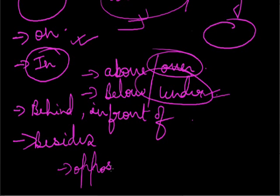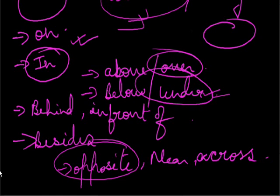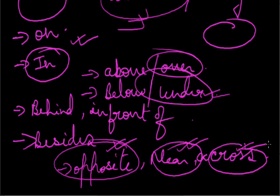Other prepositions: 'opposite,' 'near,' and 'across.' 'Opposite' means in a position facing someone or something but on the other side: 'The person sitting on the opposite seat was busy reading a novel.' 'Near' means close by: 'The State Bank of India has installed an ATM machine near our house.' 'Across' means on the opposite side of: 'The library is just across the road.'